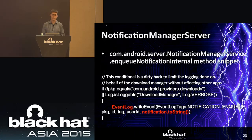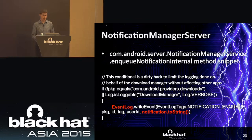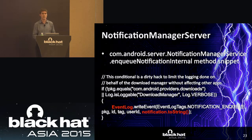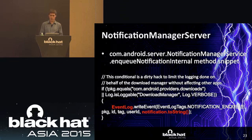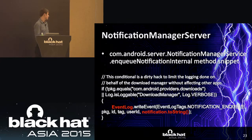The notification manager server runs in the system server process. When interacting with the notification manager via the front-end API, you're calling an interface that interacts with com.android.server.NotificationManagerService in the system server. The enqueueNotificationInternal method is called whenever a notification is received. A snippet of its source code shows that if the notification isn't from the download manager, it gets the toString() of the notification and writes it to the event log under the notification NQ log tag — which as an integer gets converted to the string 'notification NQ'.